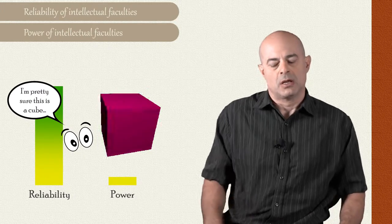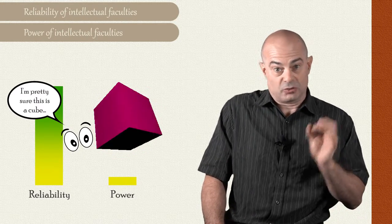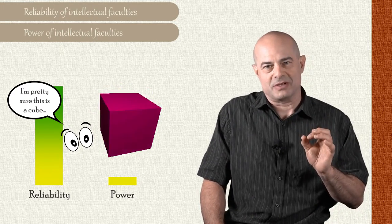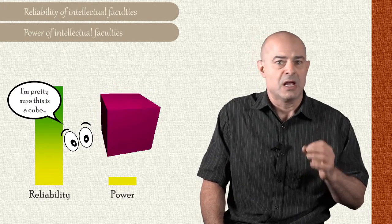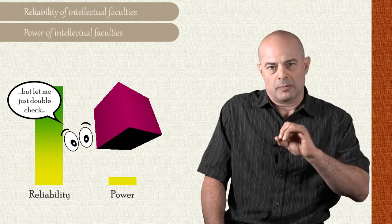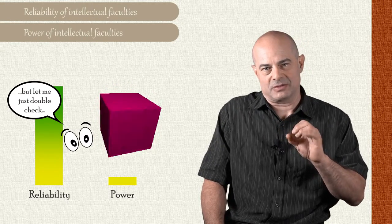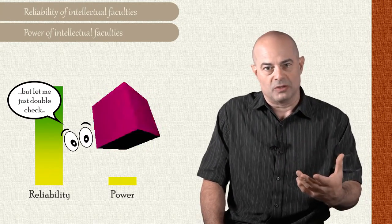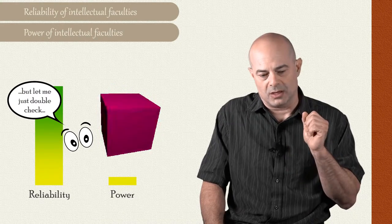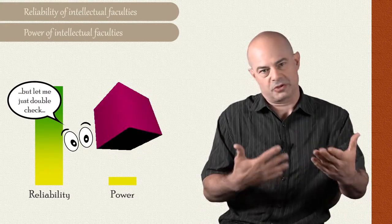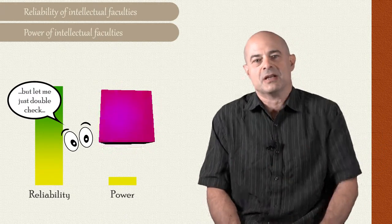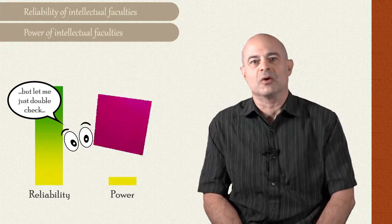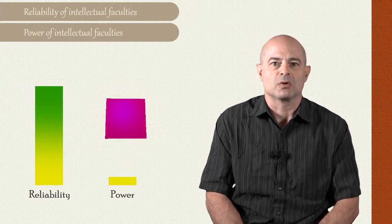Now that person presumably is going to have extremely reliable perception because they're being so careful that it's going to be very hard for them to ever make a mistake, but they're going to have poor power with their perception because they're going to get very few true beliefs. They're just not going to rely on the normal perceptual cues that we can tell a cube from a sphere without walking all the way around it and making absolutely sure about the shape.